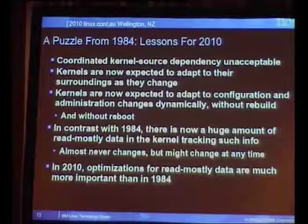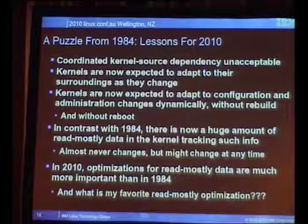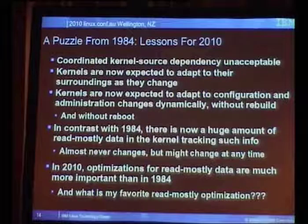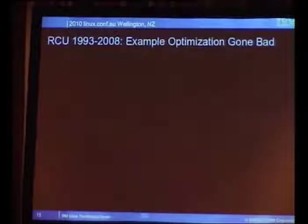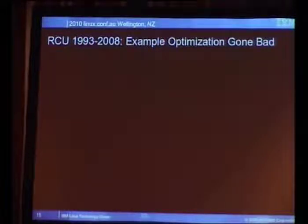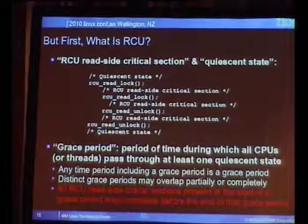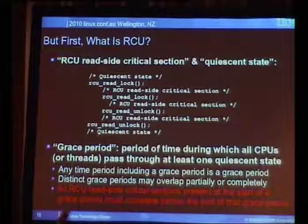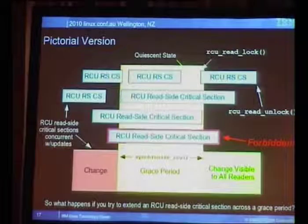Some of you know my favorite read-mostly optimization, and of course this talk will cover mostly that. I have given non-RCU talks occasionally, but most of them are on that topic. First we'll take a look at the time frame from 1993 to about 2008, where RCU is accumulating these kinds of problems. There are three phrases to pay attention to: RCU read-side critical section, quiescent state, and grace period.